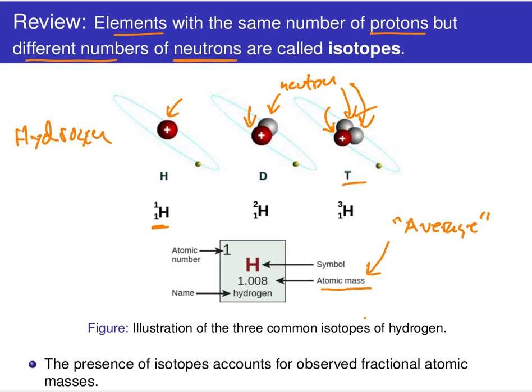It's this average — more specifically, the weighted average — that accounts for the fraction. Because remember, you can't have a fraction of a proton or a fraction of a neutron. But of course, when you look at the periodic table, all of these different masses have varying numbers of decimal places. As a result, we conclude that the elements we see in the periodic table have different naturally occurring isotopes.